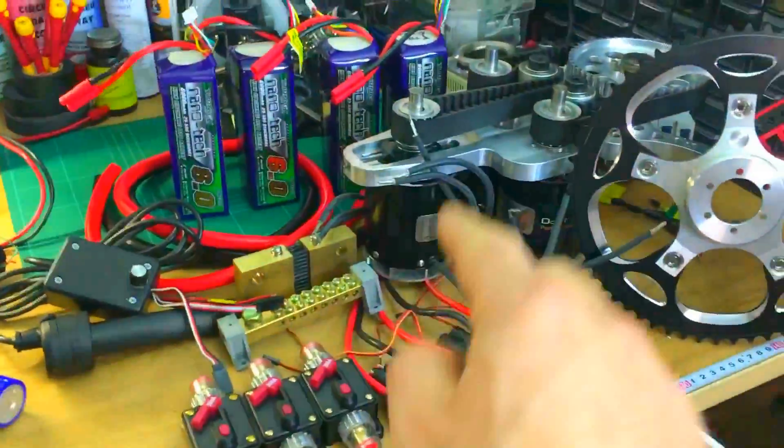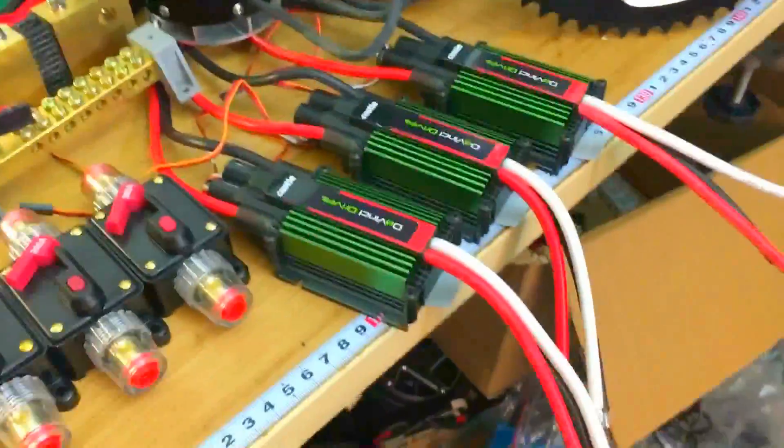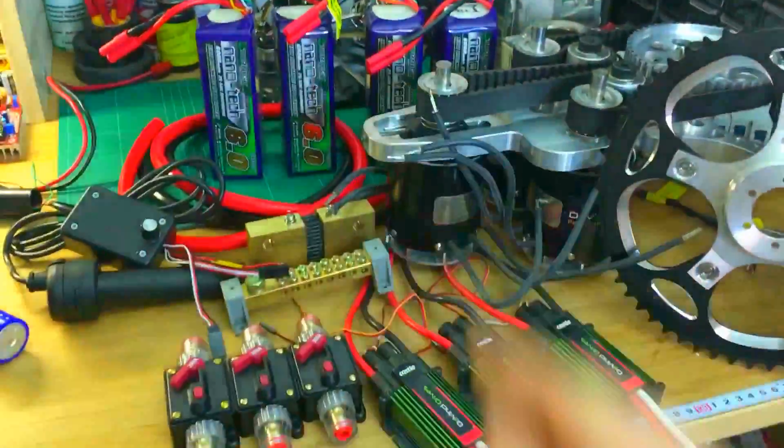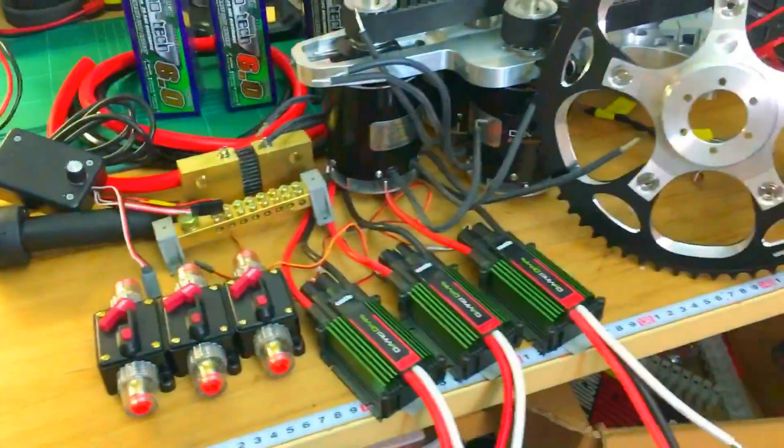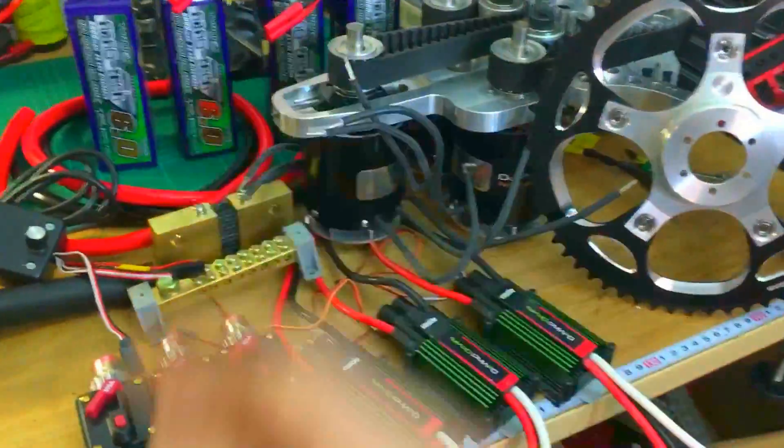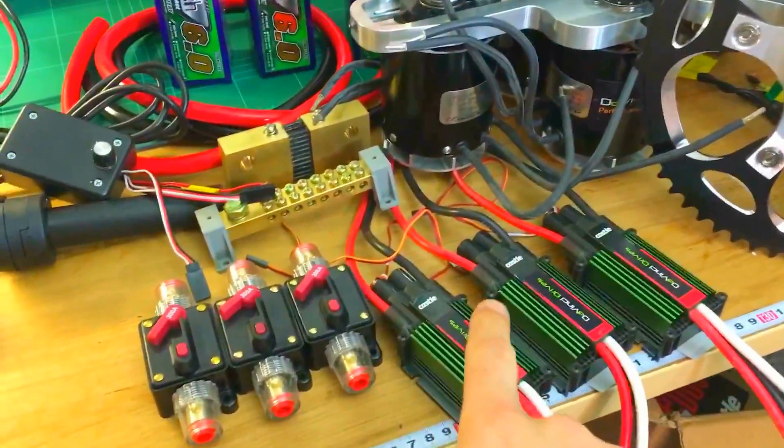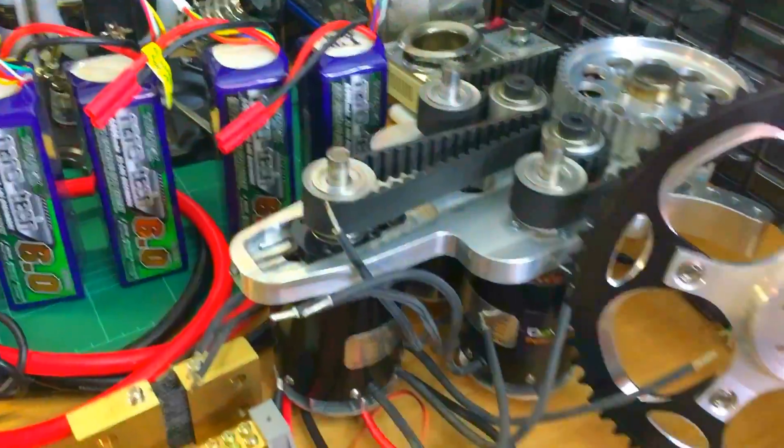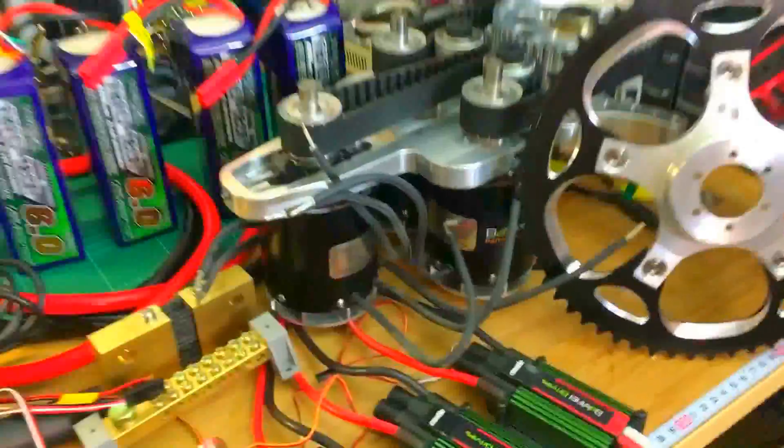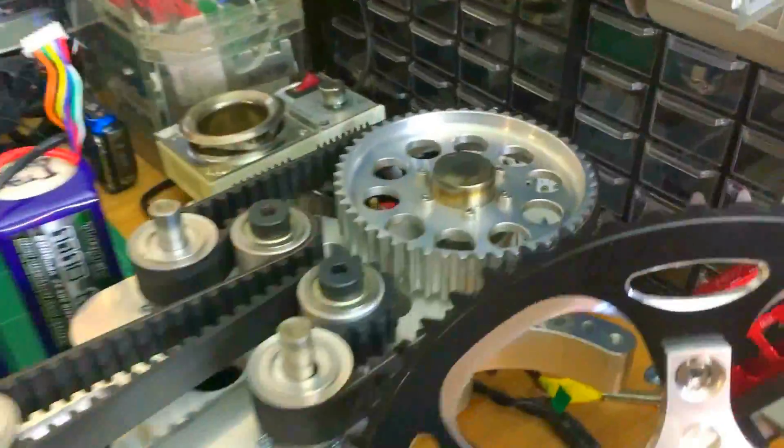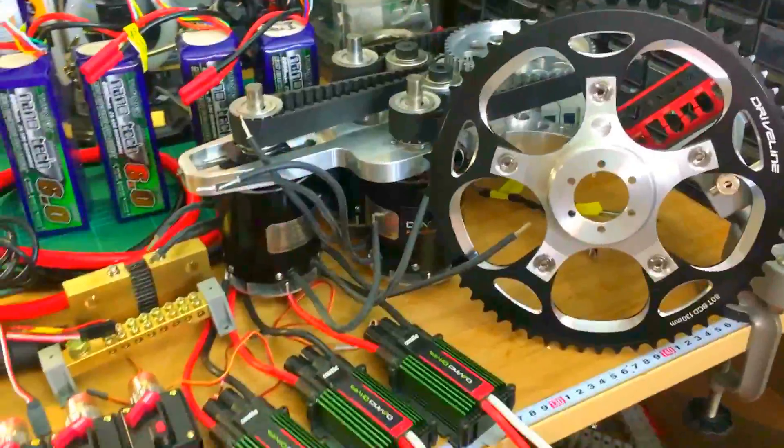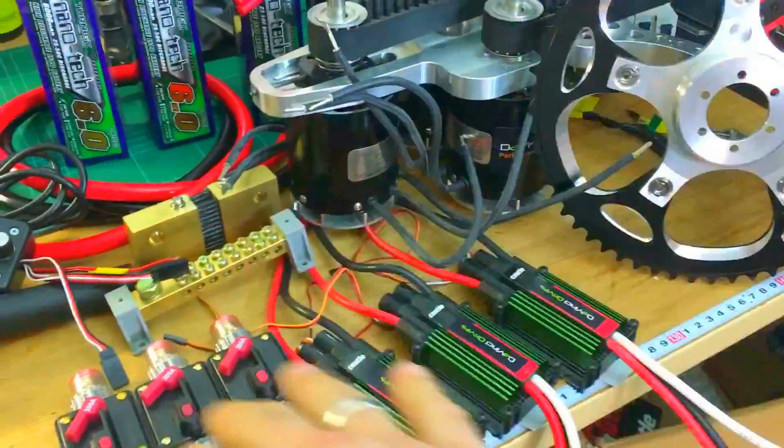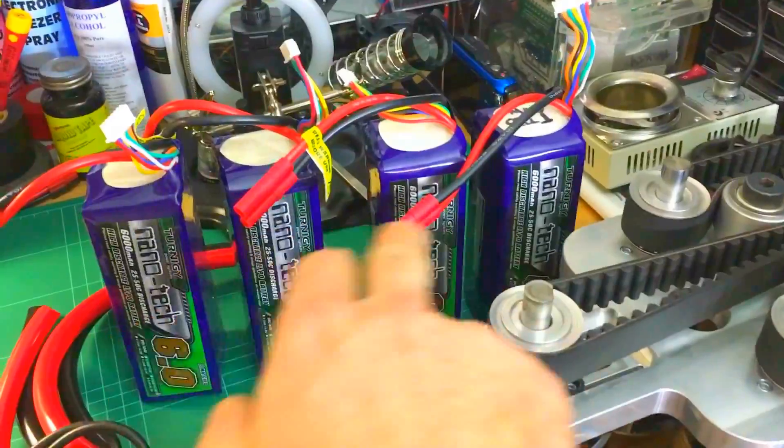So this is the 42,000 watt motor. 42,000 watts, 840 amps total - 280 amps per motor. Triple Astro Flight 3220 motors. This is a monster made by Matt Schumacher in the US. Everything was made in the US, everything apart from the batteries here from China.